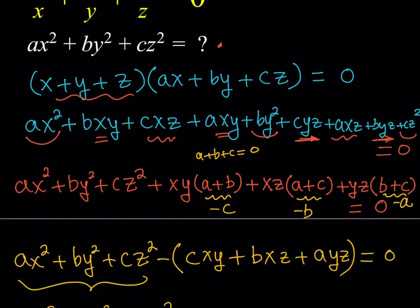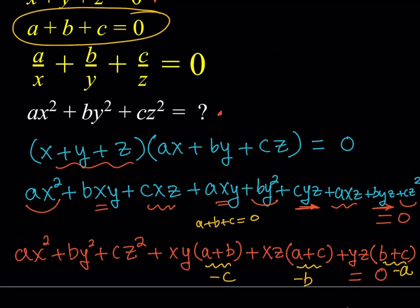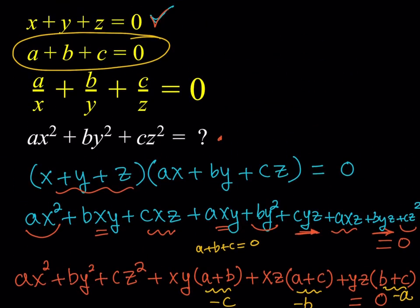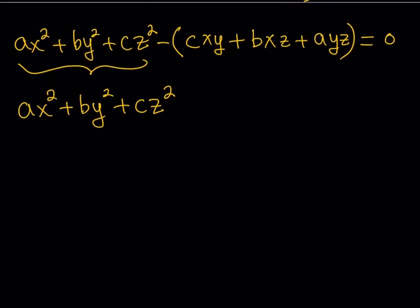We're trying to find the value of ax squared plus by squared plus cz squared based on the givens. And as you know, the givens are, there are three givens. We use the first one, which is x plus y plus z is equal to zero. a plus b plus c is equal to zero. We use that one as well. Now is the time to use the third one. But how do you use that one? We're going to see in a little bit. So stay tuned.